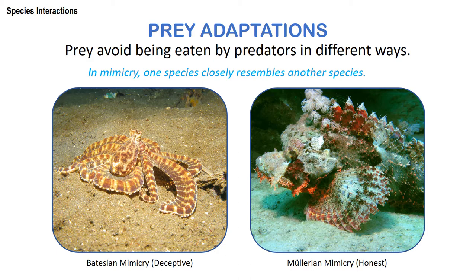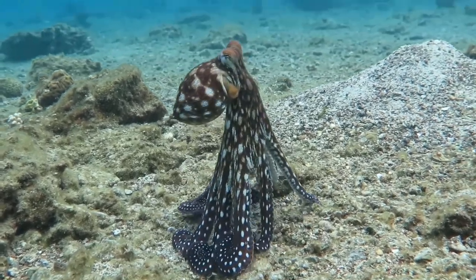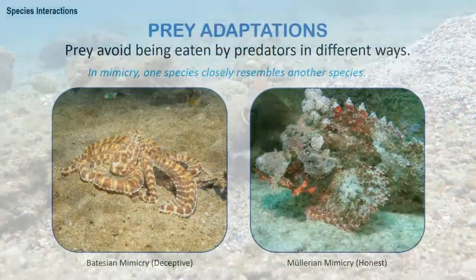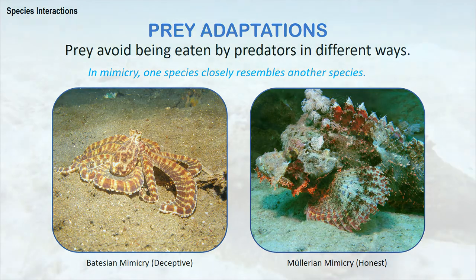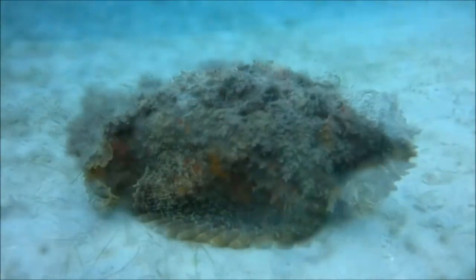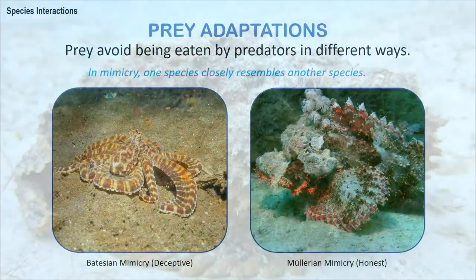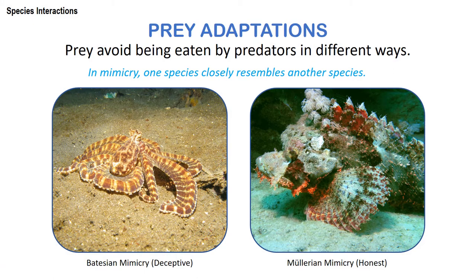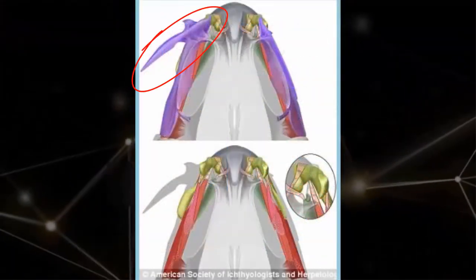In mimicry, one species closely resembles another species. There are two forms. A harmless octopus mimicking the venomous coral snake is a form called Batesian mimicry. Another form called Müllerian mimicry exists when two or more dangerous or distasteful species look similar. A stonefish shows a striking color common among dangerous or poisonous species — and indeed the stonefish is truly dangerous, being able to inject venom using its dorsal fin and having a bony switchblade-like structure near its head.